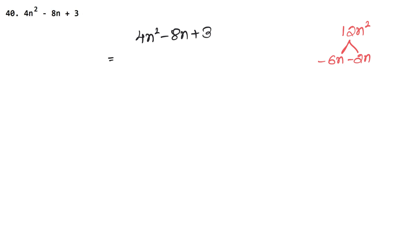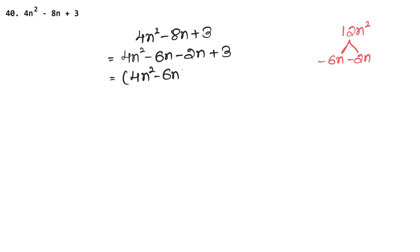So our expression becomes 4n squared minus 6n minus 2n plus 3. Now let's group in brackets: the first pair is 4n squared minus 6n, and the second pair is minus 2n plus 3. In the first bracket, 2 and n are common.